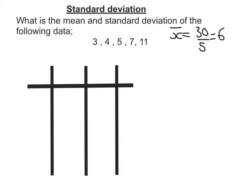Now, to work out the standard deviation of this data set, I'm going to have to draw up a table. My first column, I just put the values I've got: 3, 4, 5, 7, 11. In the next column, what I do is I take away the mean from all of them.